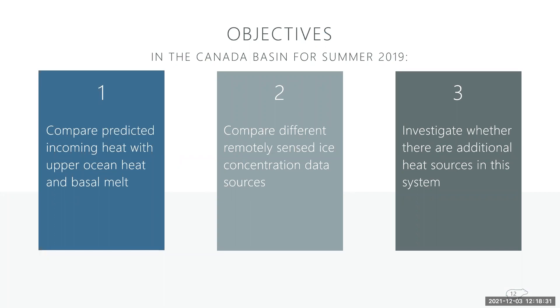So given the need to better understand the mechanisms of sea ice melt as it relates to incoming sunlight each summer, I set out to construct a 1D heat budget in order to address these three objectives in the Canada basin for the summer of 2019. The first one is to compare predicted incoming heat with upper ocean heat and basal melt, which means that incoming solar radiation through open water is compared to in-situ observations of heat. The second is to compare ice concentration data from a standard source with a more experimental source. And the third objective is to investigate additional heat in the system.